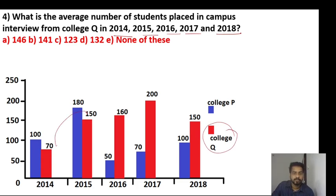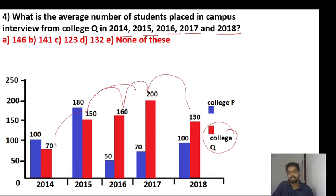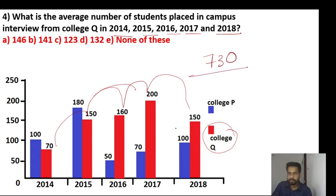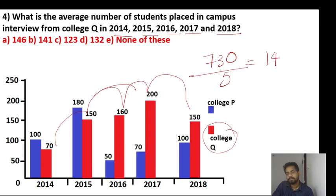Values for Q: 70, 110, 20, 20, 20, 30, 30, 50. Total for Q: 580 plus 150 equals 730. Divide by 5: 730 divided by 5 equals 146. So option A, 146 is our right answer.